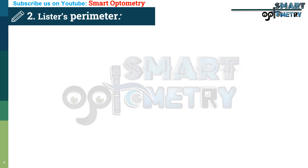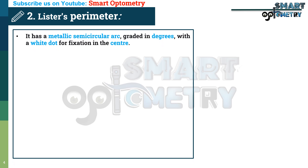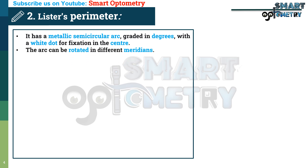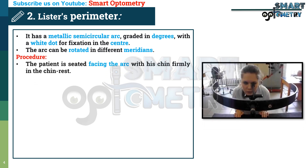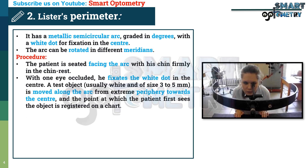Now, Lister's Perimeter. It has a metallic semicircular arc graded in degrees with a white dot for fixation in the center. The arc can be rotated in different meridians. Procedure: The patient is seated facing the arc with the chin firmly in the chin rest. With one eye occluded, the patient fixates the white dot in the center.